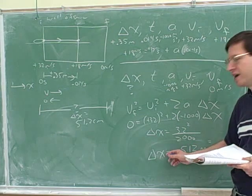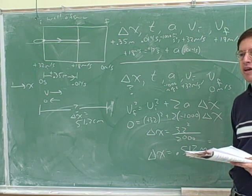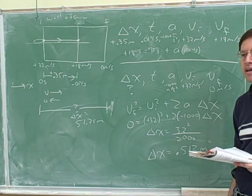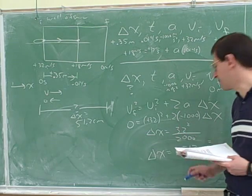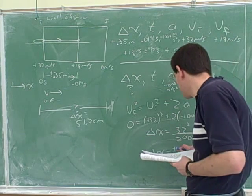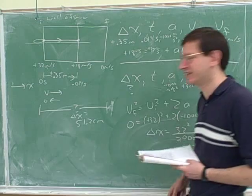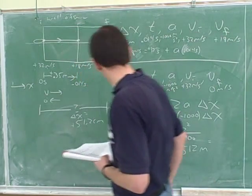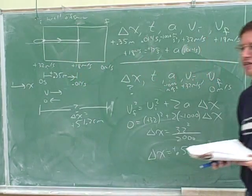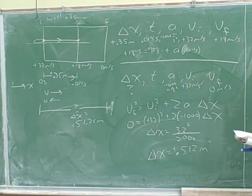Did this come out positive or negative mathematically? Positive — and that's what we would expect. If it came out negative, we would have known we made a mistake. Displacements can be positive and negative as well.